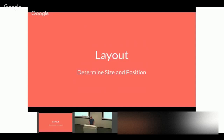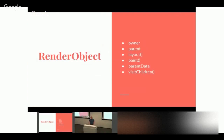The first phase is layout. The base class for everything that participates in layout and painting is called RenderObject. RenderObject is a pretty abstract concept — it has an owner that drives the pipeline, and each render object knows its parent. In general, a render object doesn't know anything about its children; it only knows how to visit them. This means different render objects are free to have different child models: a single unique child, a list of children, or several named children.